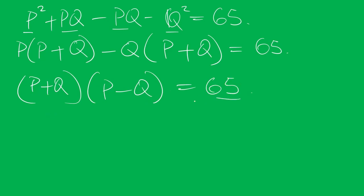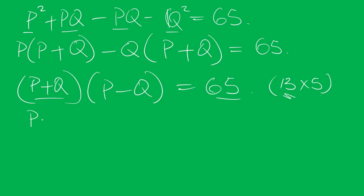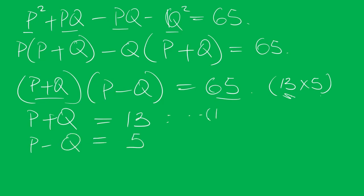Now, the factors of 65 are 13 times 5 — these are the only factors of 65. Since p and q are positive numbers, the larger factor goes with p plus q, so p plus q equals 13 and p minus q equals 5. This is equation 1 and equation 2.